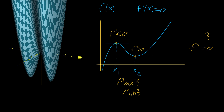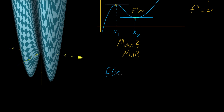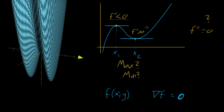In the multivariable world, the situation is very similar. As I've talked about in previous videos, you'd have some kind of two-variable function, and instead of looking for where the derivative equals 0, you're going to be looking for where the gradient of your function is equal to the 0 vector. That corresponds with finding flat tangent planes. The subject of this video is going to be on what is analogous to this second derivative test — how can we, in the multivariable world, figure out if you have a local minimum, a local maximum, or a saddle point?